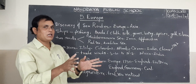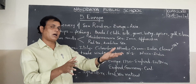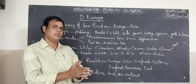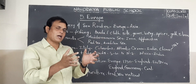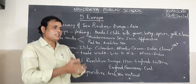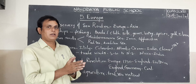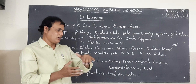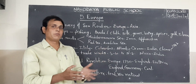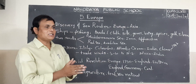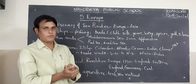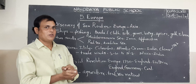Asian countries have abundant natural wealth. The atmosphere there is very suitable for growing crops and rearing animals. That is why European countries needed raw material and food grains from Asian countries.